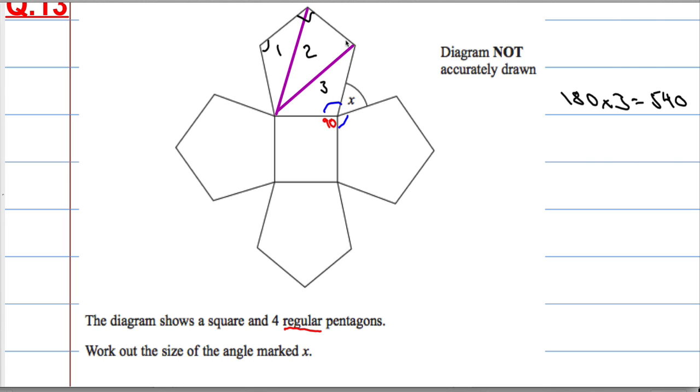But we have one, two, three, four, five angles inside the shape. They're all the same size, so we do 540 divided by 5 to work out that interior angle. And 540 divided by 5 is 108 degrees.